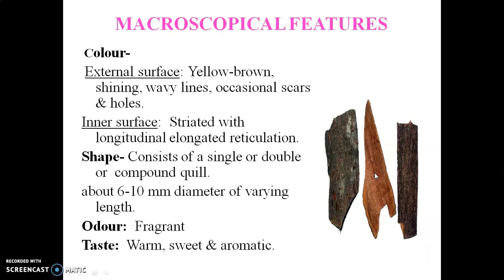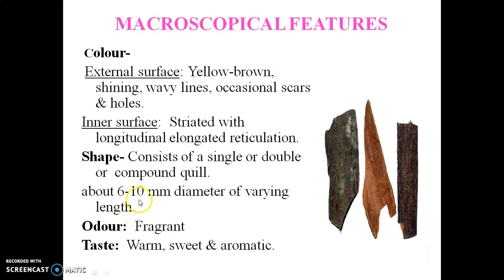Regarding the shape, these bars consist of a single, double, or compound quill. When the bark is in a rounded shape, that is known as a quill. If it has a single round it is a single quill, if both ends are rounded it is a double quill, and if it has a number of rounded barks inside one another it is a compound quill. It has a diameter of about six to ten mm and a length of about one meter or more.